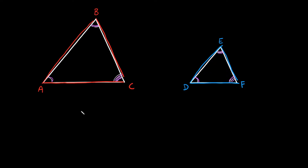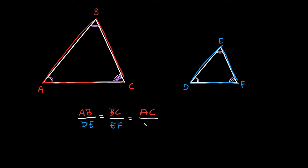We can say that the ratio of AB over DE, the corresponding side, is equal to the ratio of BC over EF, and set that equal to AC over DF. And when you have two similar triangles, the way you'd write that is: triangle ABC — using the triangle symbol — is similar to triangle DEF.